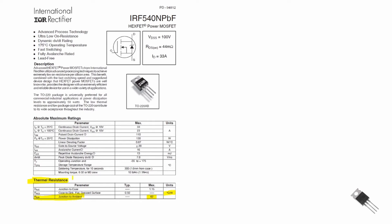There's also another spec that's very important to find on the data sheet, and that is the operating junction temperature. For this device, we see we have a maximum operating junction temperature of 175 degrees centigrade. That is a spec that we cannot exceed. And there's finally one more to look at: that's called the power dissipation spec. For this device, it's listed as 130 watts.